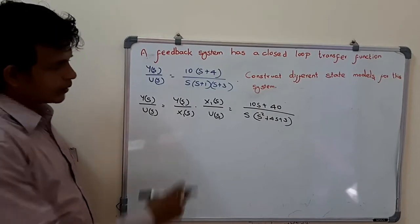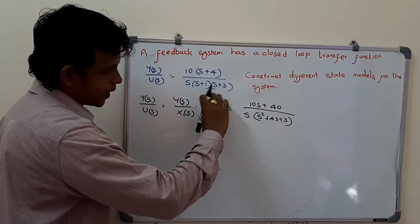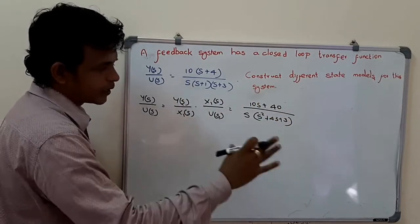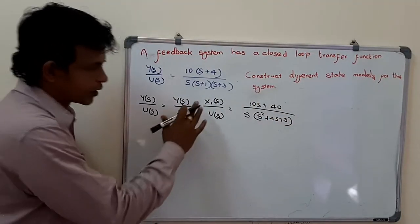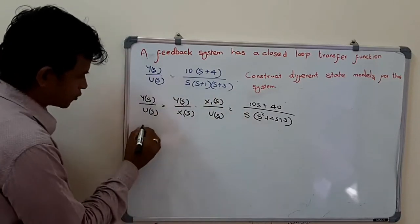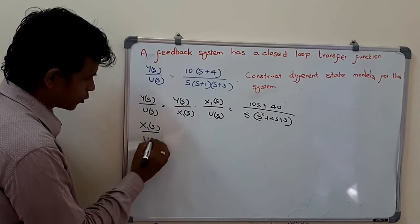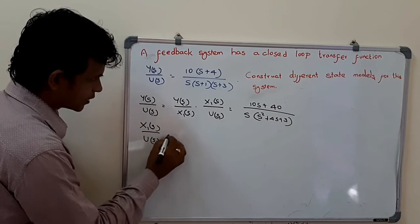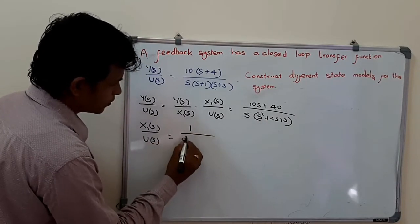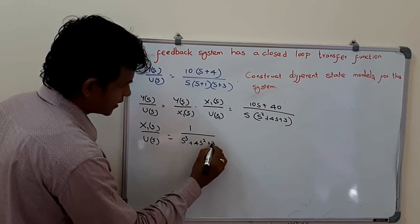I am equating the denominator to this part and the numerator to this part and deriving an equation. Let x1(s) divided by U(s) equal to 1 divided by (s cubed + 4s squared + 3s).